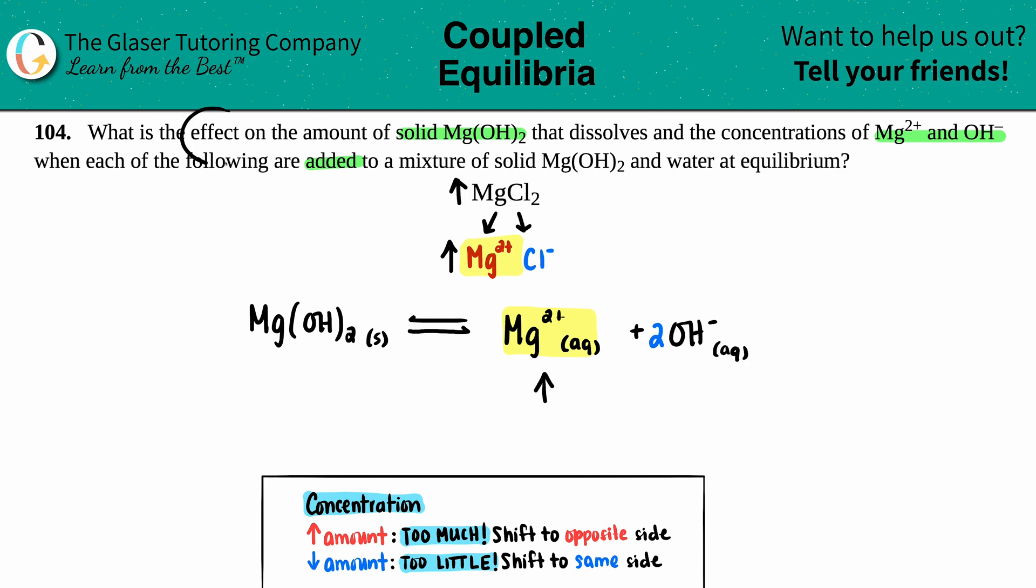Remember, they want to know what the effect is going to be on all three of them: Mg(OH)2, Mg2+, and OH-. But now how do I get these two answers?